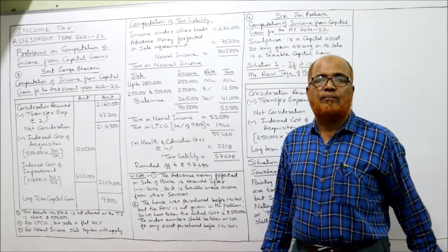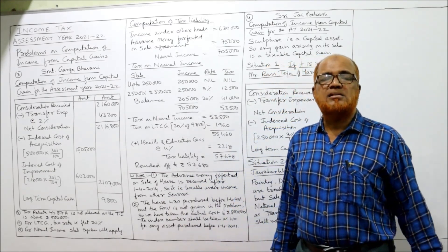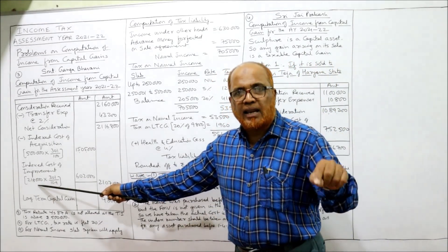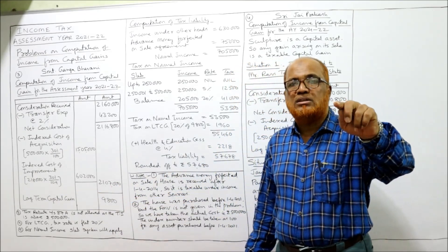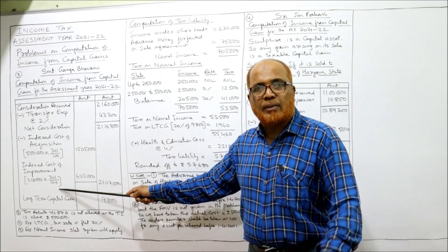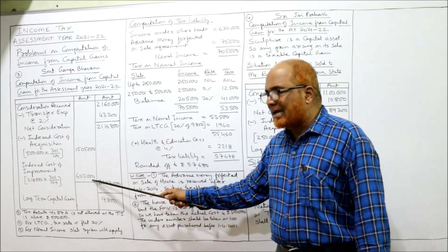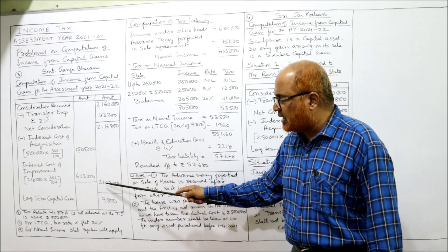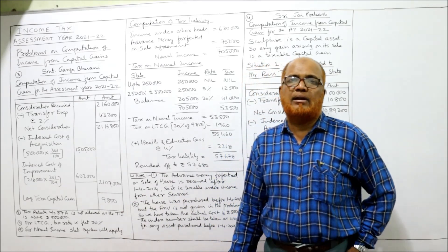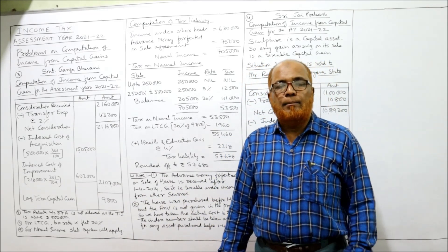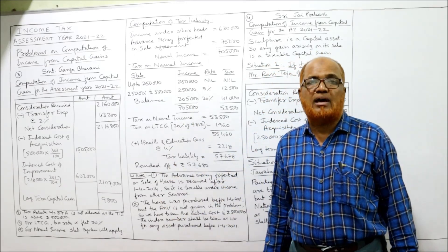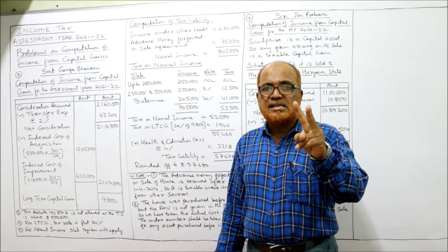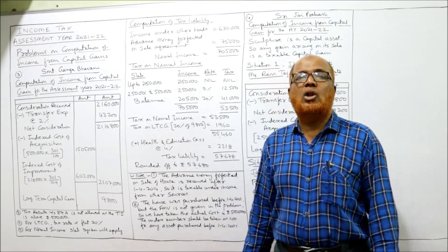For indexed cost of improvement: two rooms were added during 2003-2004 at a cost of rupees 2 lakh 18,000. Indexed cost of improvement = 2,18,000 × 301 ÷ 109 = rupees 6,02,000. Total deductions = 15,05,000 + 6,02,000 = 21,07,000. Net consideration 21,16,800 minus 21,07,000 = rupees 9,800 long-term capital gain. It is long-term because the house was purchased in 1997-98; for land and buildings, holding more than two years qualifies as long-term.